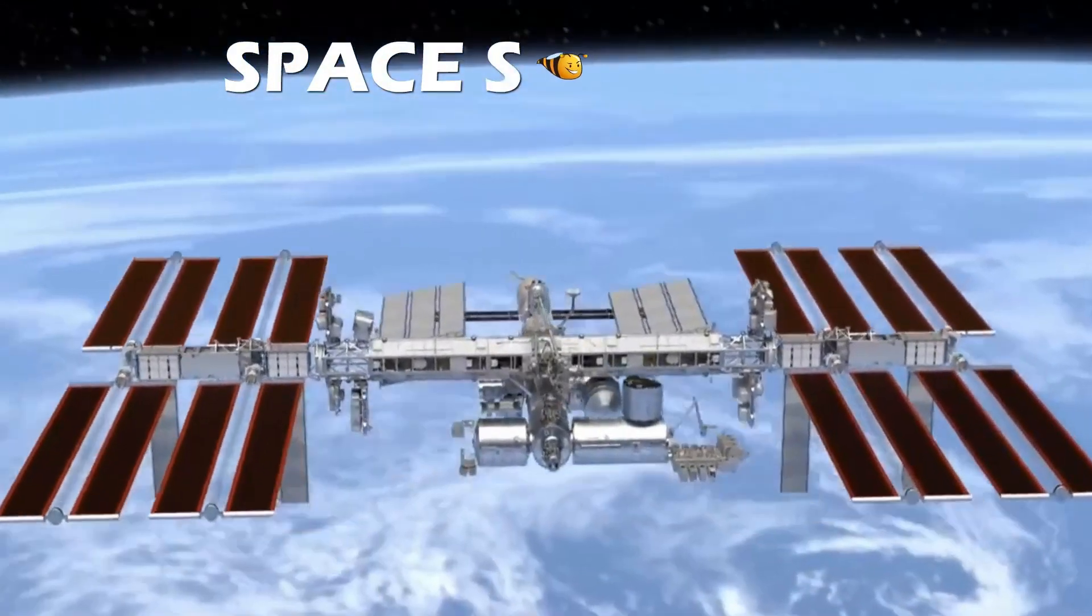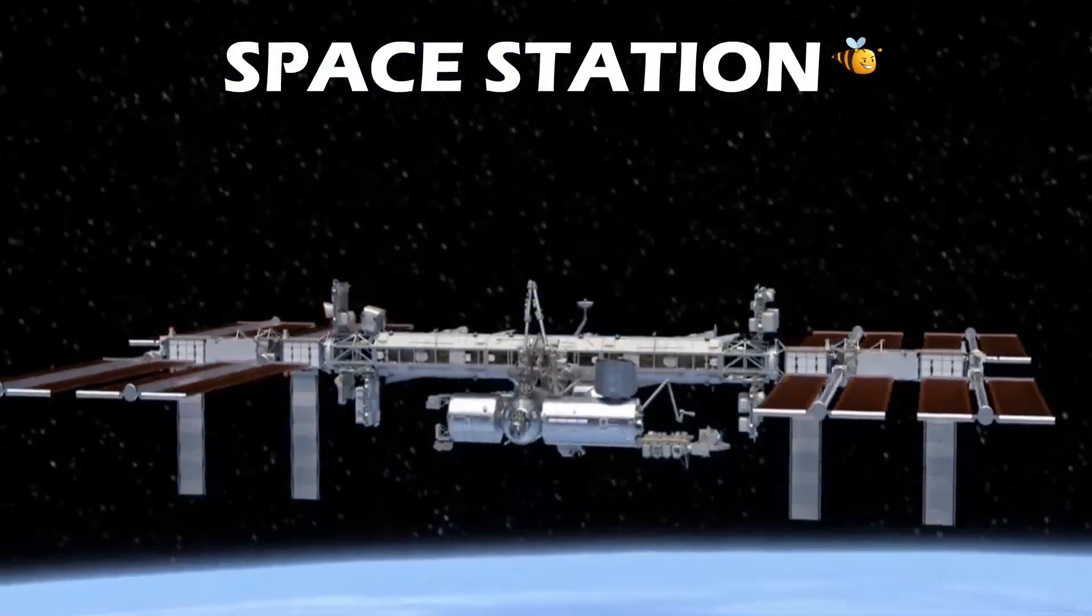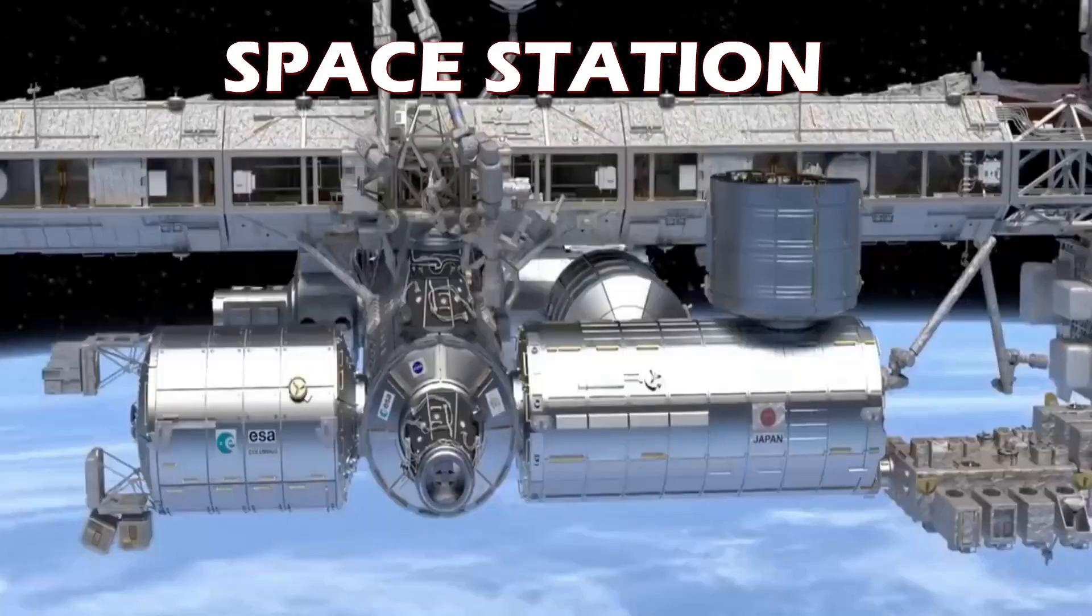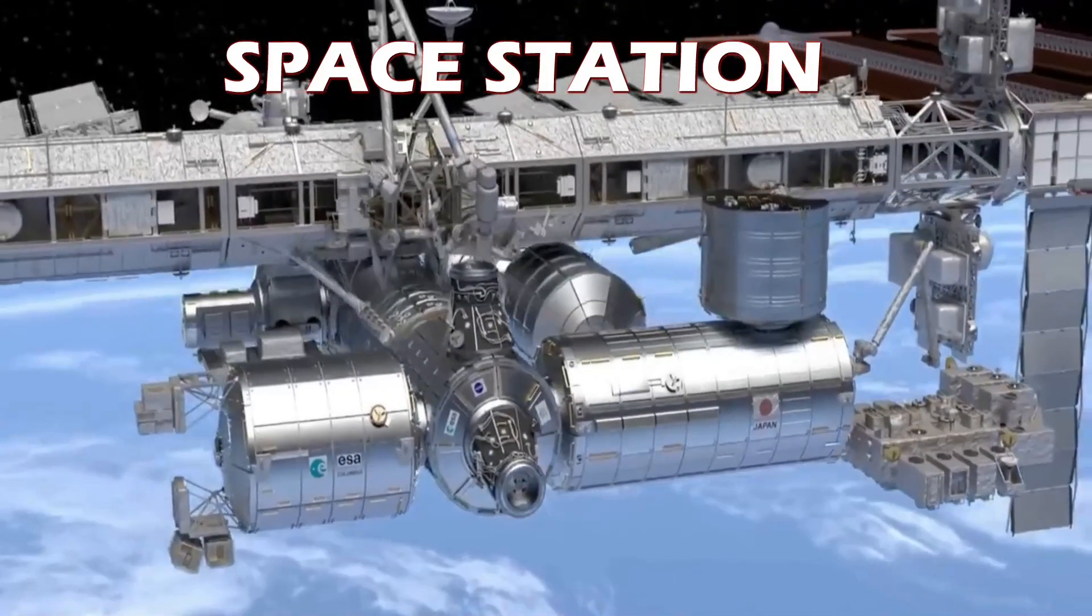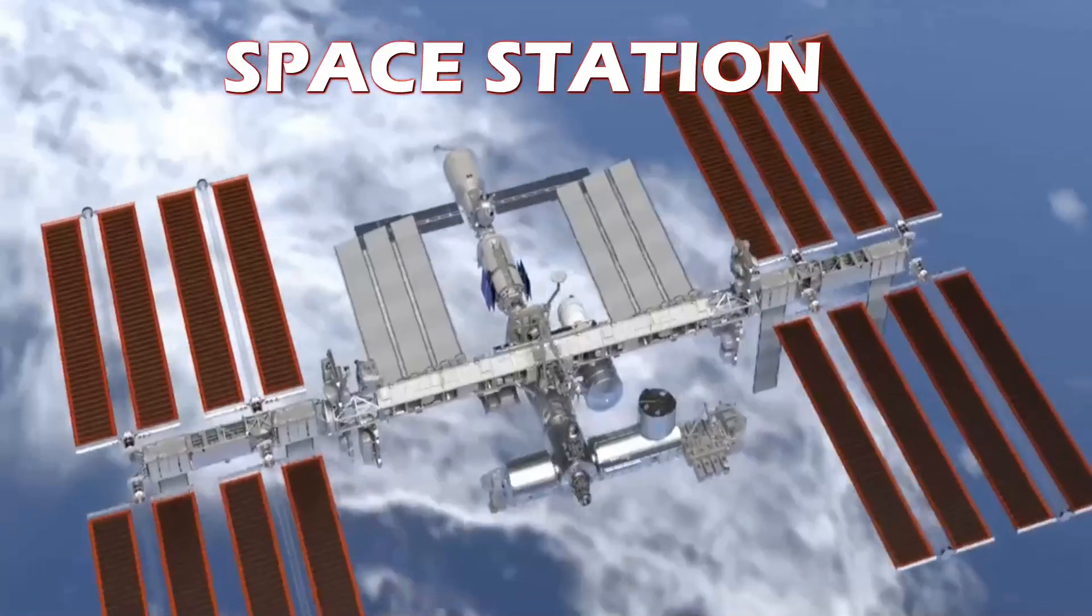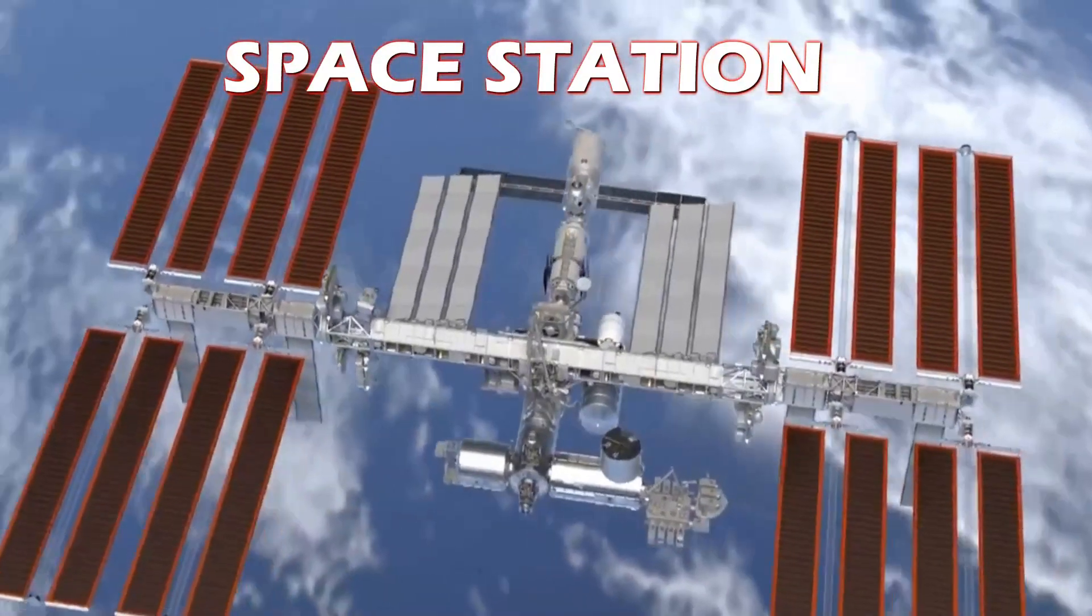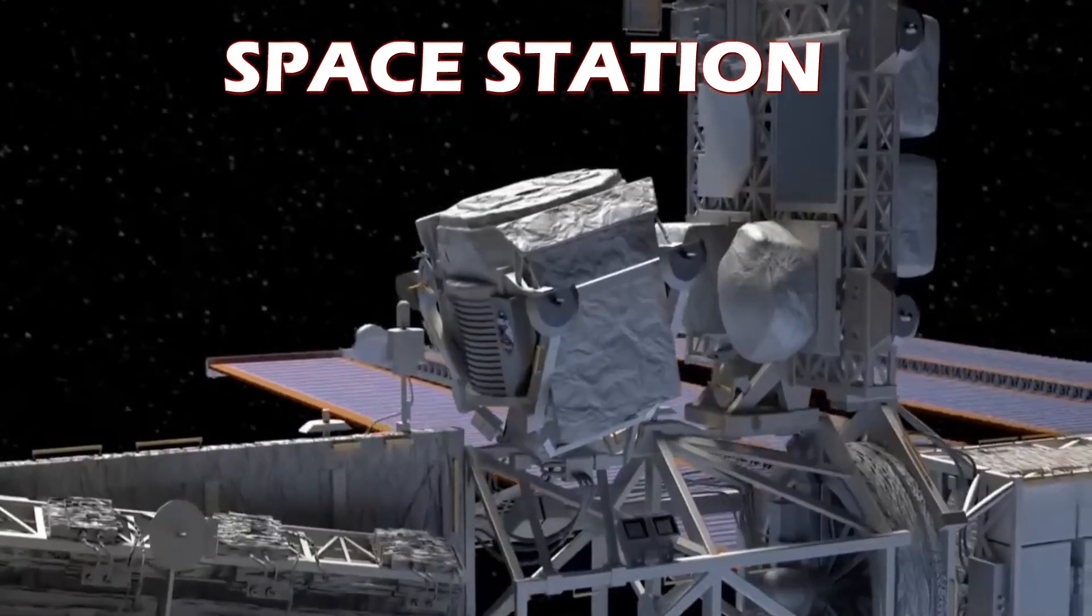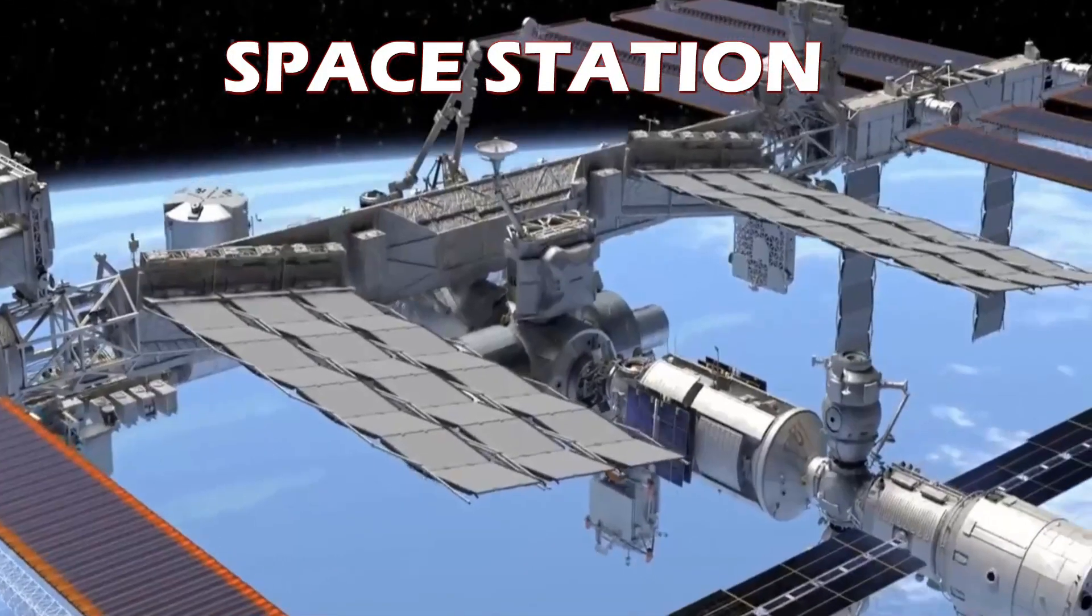Russia and America established a large space station in space for scientific experiments. Astronauts and scientists stayed there for many months. Russia had constructed the first space station in 1971.